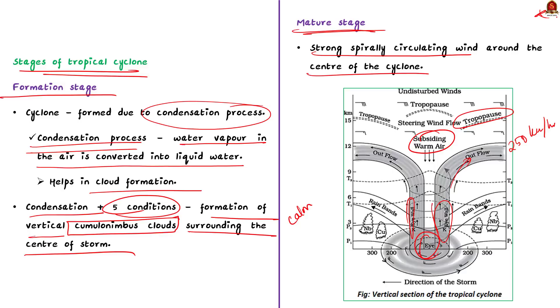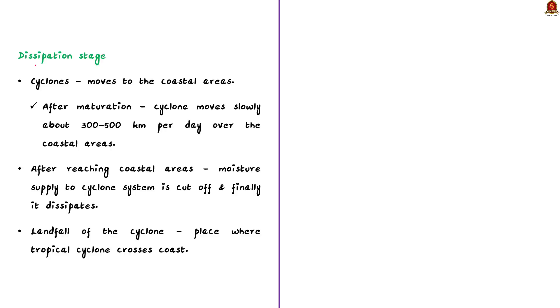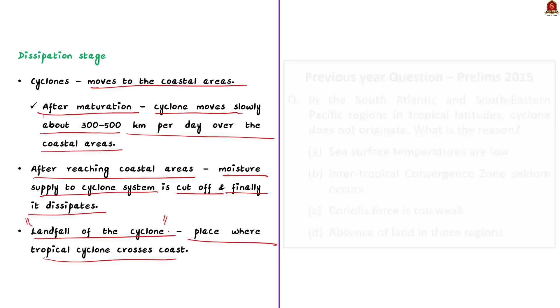Now, comes the final dissipation stage. As we saw earlier, the cyclones that formed in the oceans or seas will tend to move over to the coastal areas or land. So, after the maturation, the cyclone storms move slowly about 300 to 500 km per day over the coastal areas. And while reaching coastal areas, the cyclones no longer get sufficient energy from warm ocean water. Therefore, the moisture supply to the cyclone storm is cut off and finally the cyclonic storm dissipates. Know that the place where a tropical cyclone crosses the coast is called the landfall of the cyclone. So, this is all about cyclones. With the learned points in mind, now we will move on to the next article discussion.